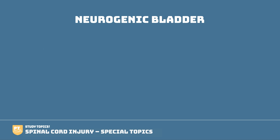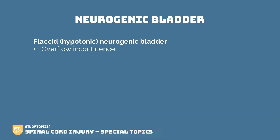Another video you might want to check out covers the different types of incontinence, because each of these types of neurogenic bladders is associated with a certain type. The flaccid or hypotonic neurogenic bladder is more often associated with overflow incontinence. The spastic bladder has more to do with overactive or urge incontinence.